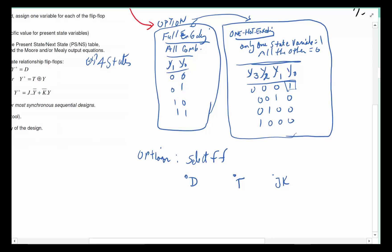Two options: the first two options you have is do I go full encoding, do I go one-hot encoding? For each one of those selections, you have three other possibilities of which flip-flop to use.